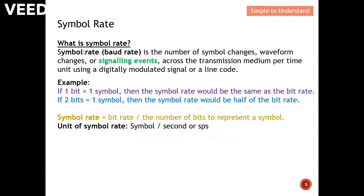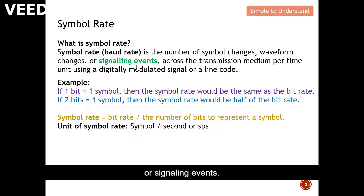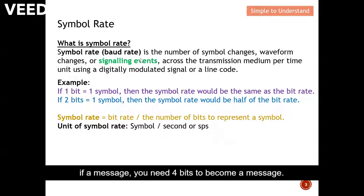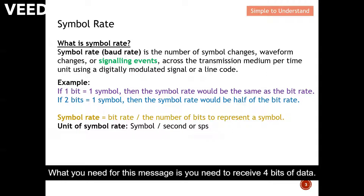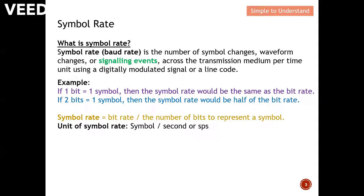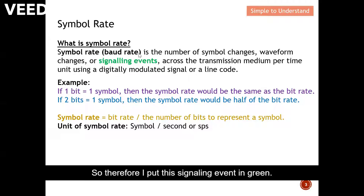Now let's understand what symbol rate is. Symbol rate is the number of symbol changes, waveform changes, or signaling events. For example, if a message requires four bits, receiving only one, two, or three bits is not enough — you need all four bits to form a complete message. Once you receive those four bits, this becomes a signaling event — it conveys a meaningful message about a certain event that occurred.